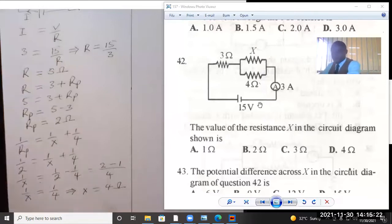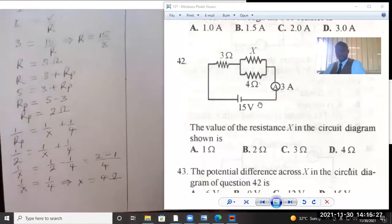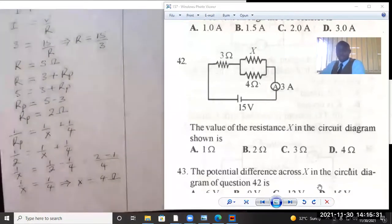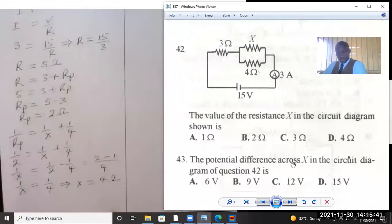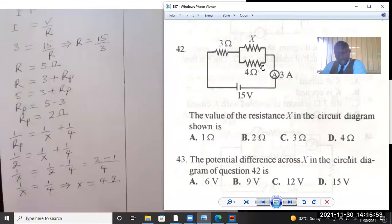Question 43 is referring to question 42. The potential difference across X in the circuit diagram of question 42. Now that we know X, we need to find the potential difference across X. When two or more components are connected in parallel, they share the same voltage.